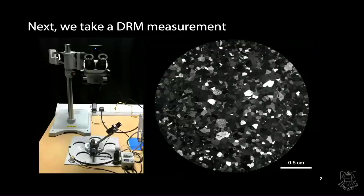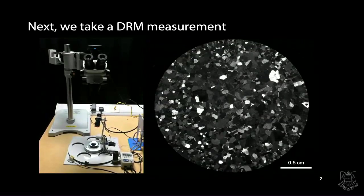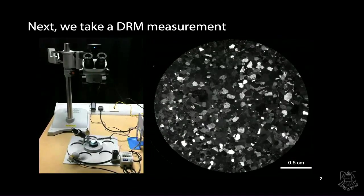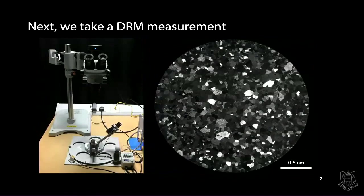We take a DRM measurement. Here you see the real setup we have in my lab - DRM relies on a very standard optical microscope, a stereo microscope. There is also a motorized stage whose function is to drive a light source - basically a flashlight - around the sample. As you rotate the light source, you're effectively changing the incoming light direction. You're imaging your sample - here's a live image of the nickel coin - as you change the illumination direction.